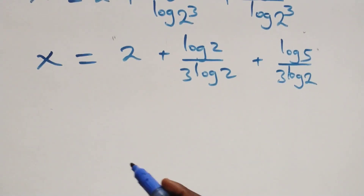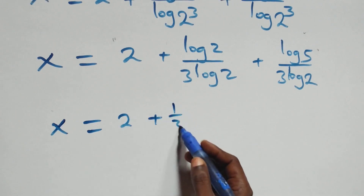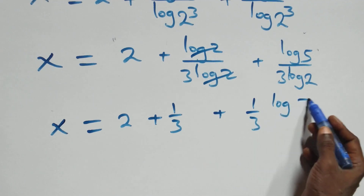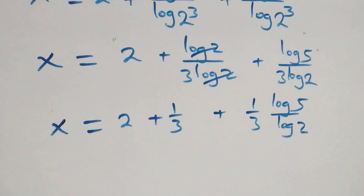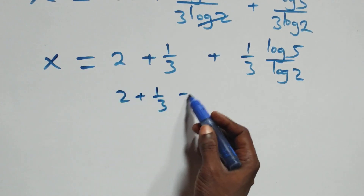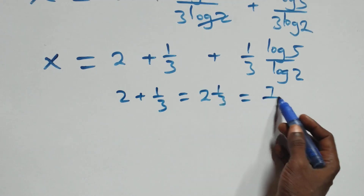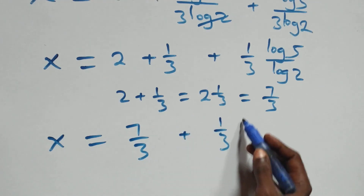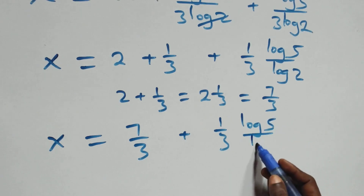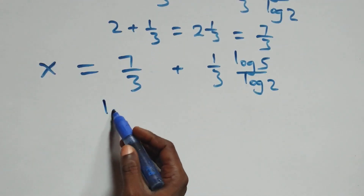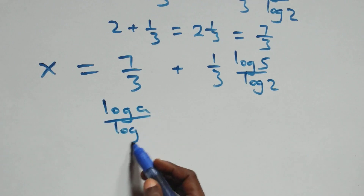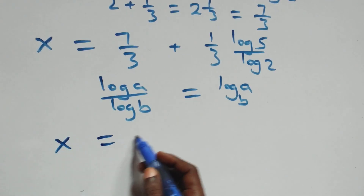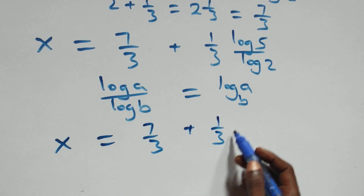This can be written as x equals 2 plus 1 over 3 — since log 2 over log 2 cancels to 1 — plus 1 over 3 multiplied by log 5 over log 2. So 2 plus 1 over 3 equals 7 over 3. Applying the change of base formula — log a over log b equals log base b of a — we get x equals 7 over 3 plus 1 over 3 · log₂5.